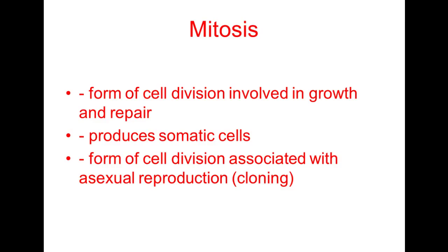Mitosis is the form of cell division associated with asexual reproduction or cloning. As a whole organism, we don't reproduce asexually — you can't chop off a finger and grow a new copy of yourself — but asexual reproduction does occur on a cellular level. For example, skin cells are constantly lost and replaced from beneath by making exact copies of existing cells.